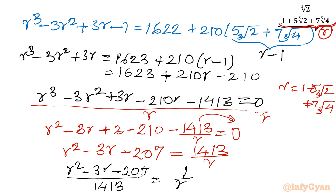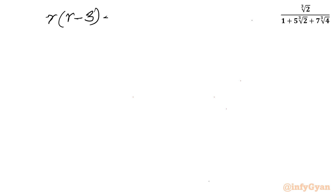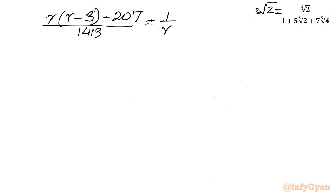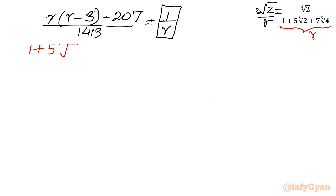So we now have our denominator ready — 1 over R is expressed in terms of R. We need to simplify the left hand side. Let us put the value of R, which is 1 plus 5 times cube root 2 plus 7 times cube root 4, into the expression (R² minus 3R minus 207) divided by 1413.